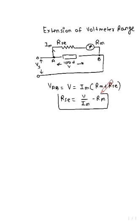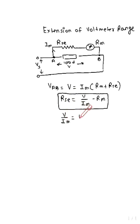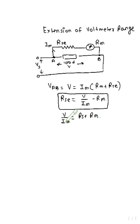We can write: V is equal to Im multiplied by (Rm plus Rse). From this equation we can also write: Rse is equal to V divided by Im, minus Rm. This is the value of the series resistance, which is very high in value.